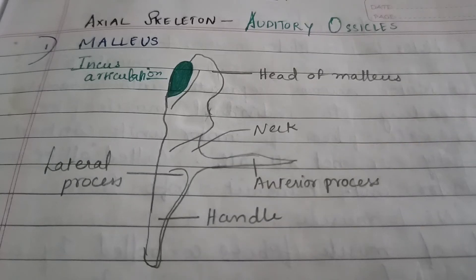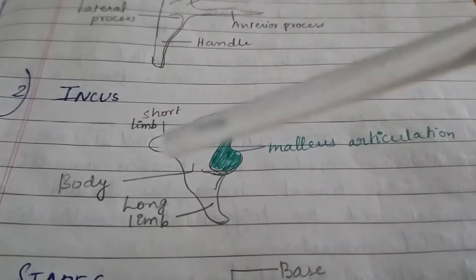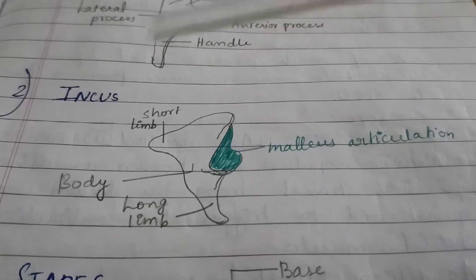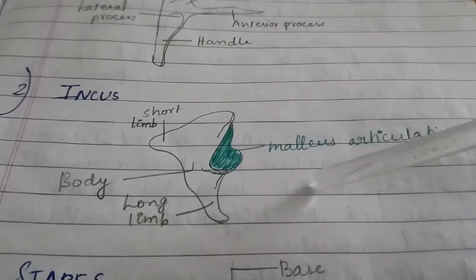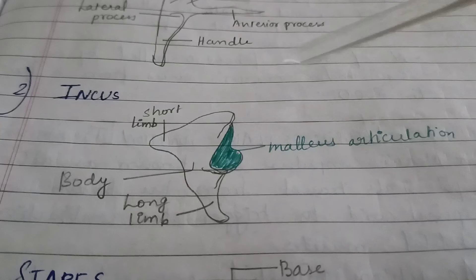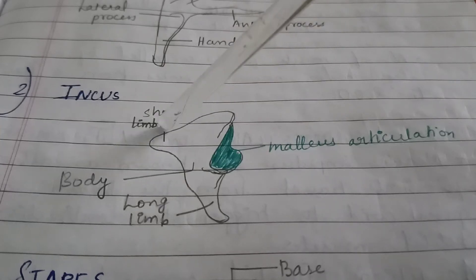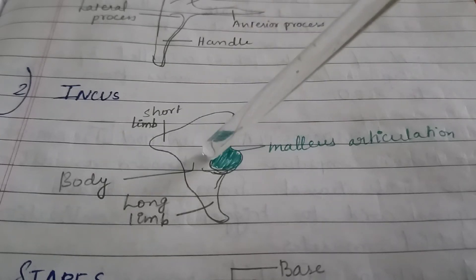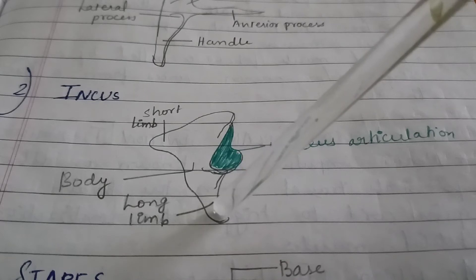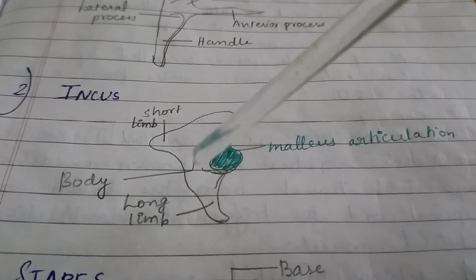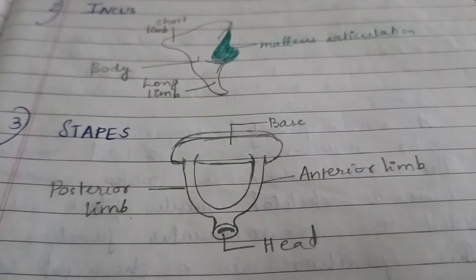The next bone is incus which is the middle of the three bones and it is also known as anvil. There is a malleus articulation point, a short limb, the body and the long limb. So altogether that is the structure of incus. Incus transmits vibration from malleus to stapes.